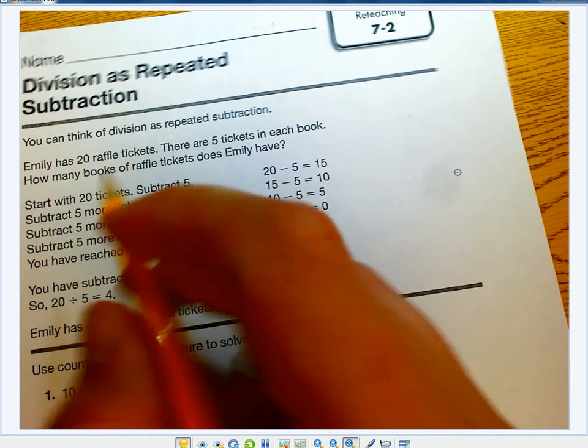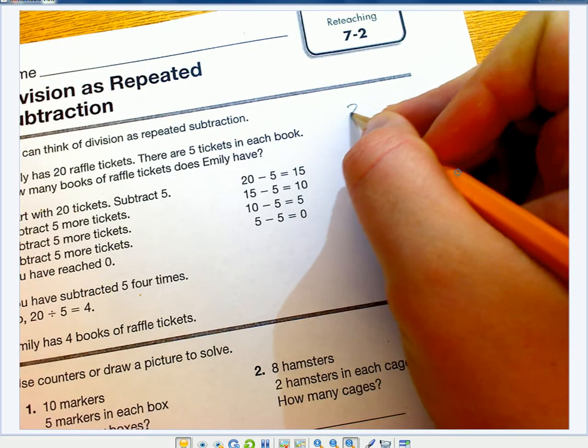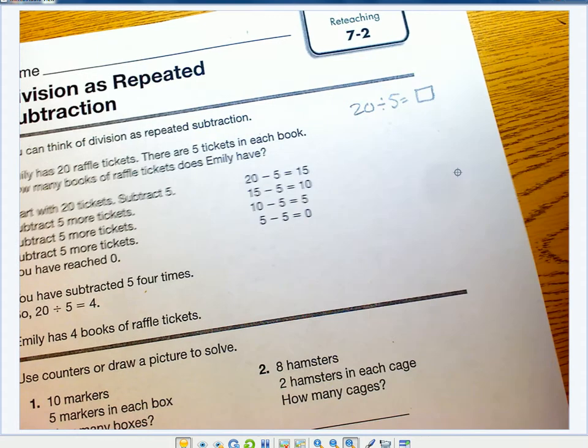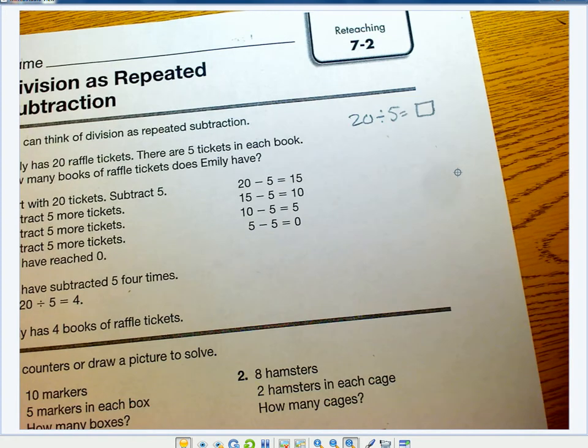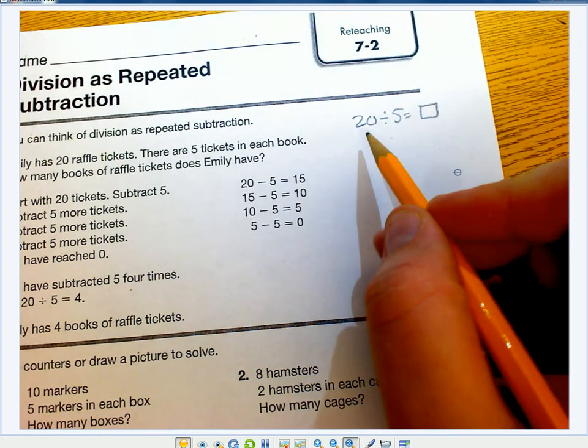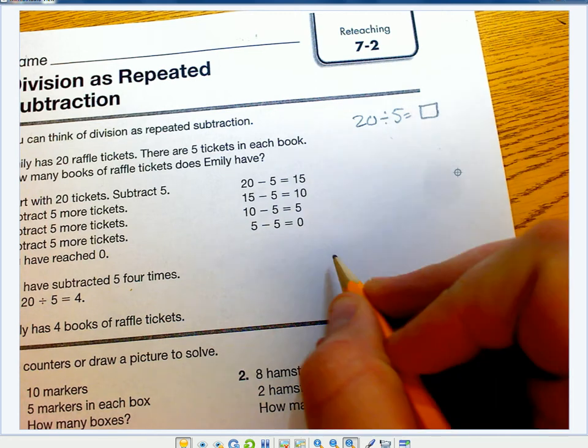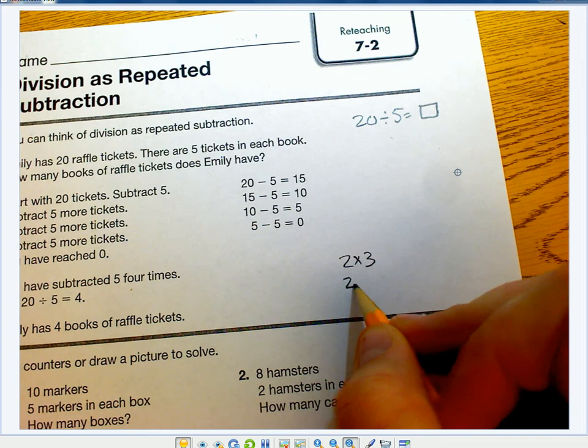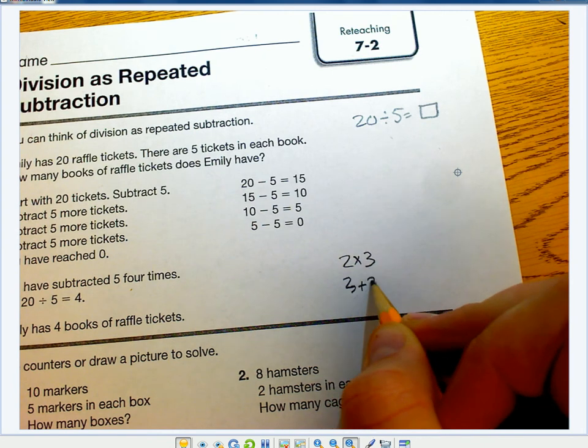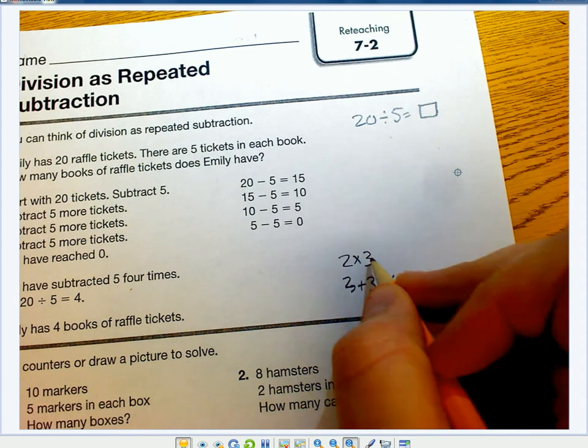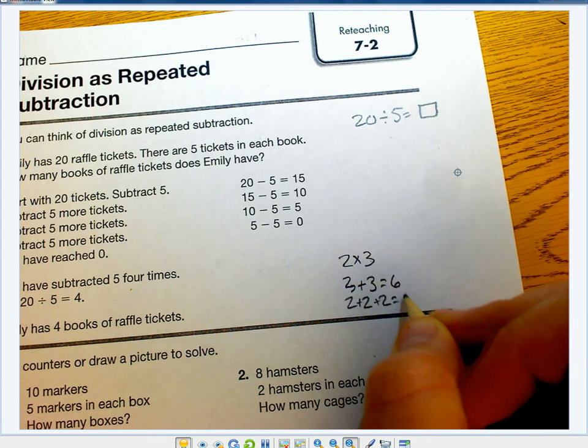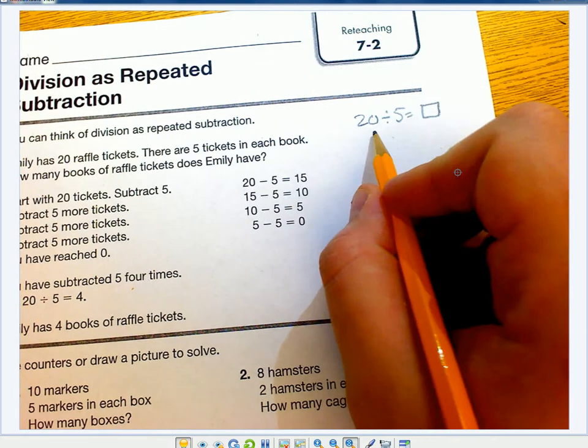When we're using repeated subtraction, I'm going to write the problem: 20 divided by 5 equals what? Repeated subtraction is just like repeated addition and multiplication. If I'm doing 2 times 3, I can do 2 groups of 3, which would be 3 plus 3 equals 6, or 3 groups of 2: 2 plus 2 plus 2 equals 6. The same thing happens for division.